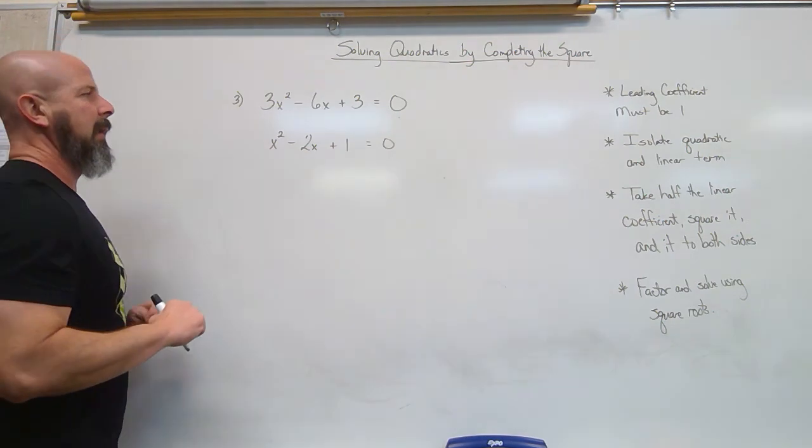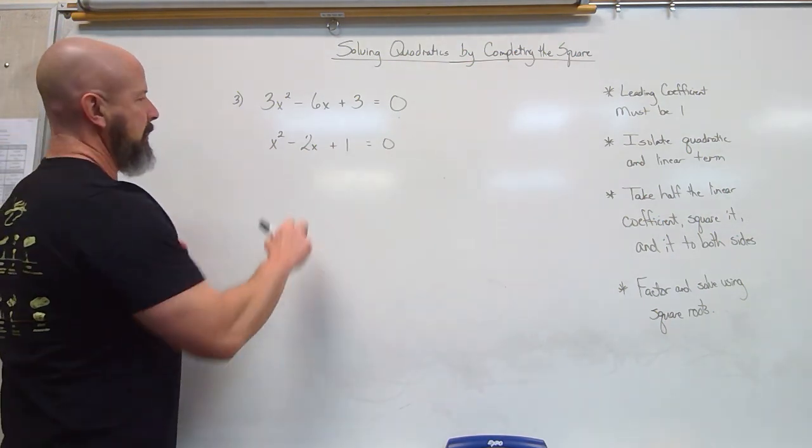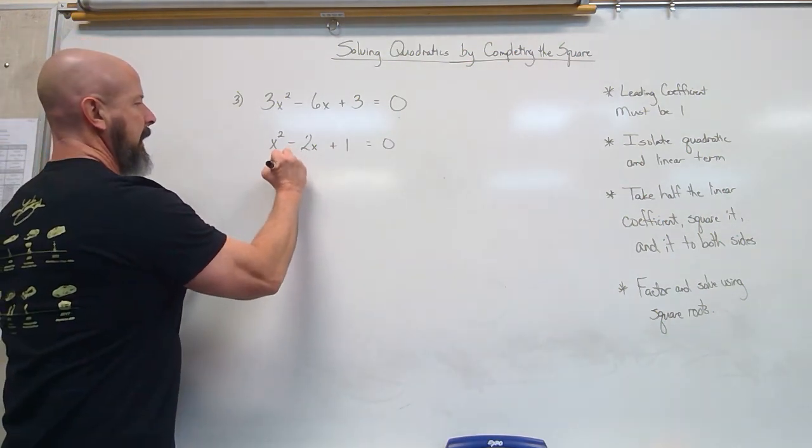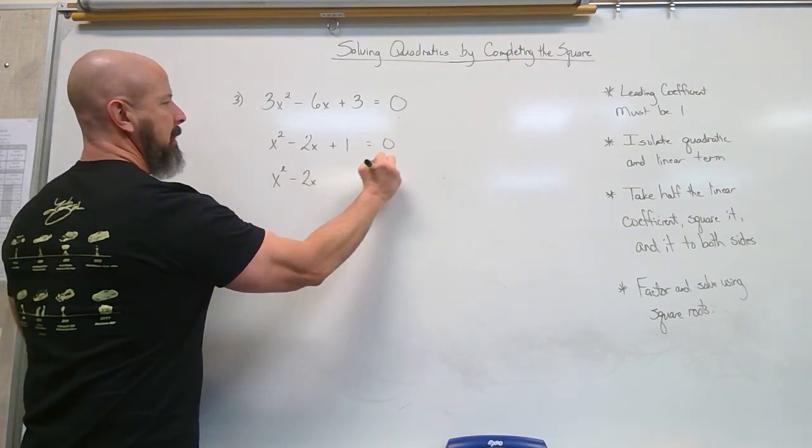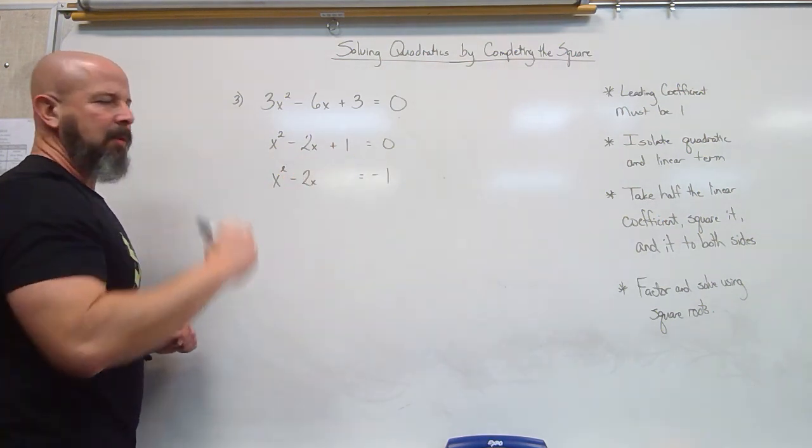Following straight through like before now. Isolate the quadratic and linear term. x² minus 2x equals negative 1 when I move the 1 over.